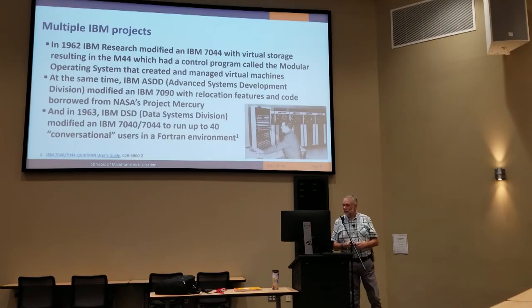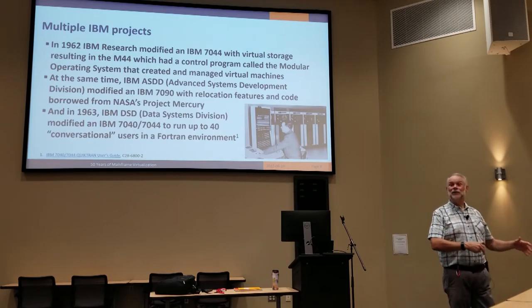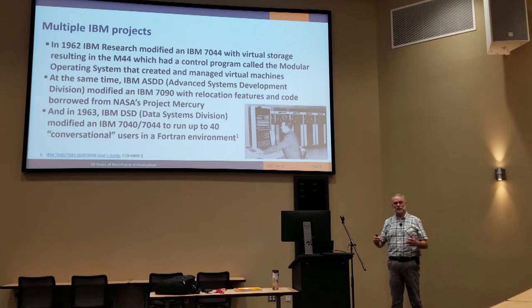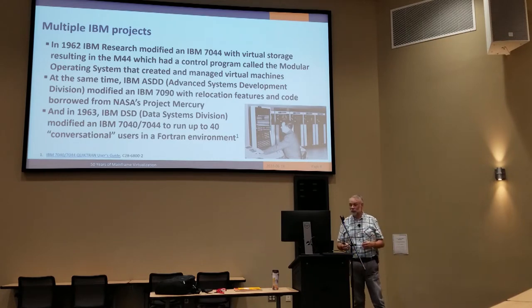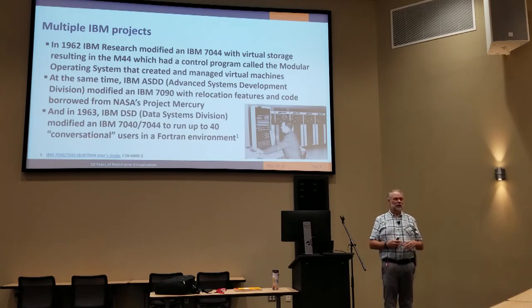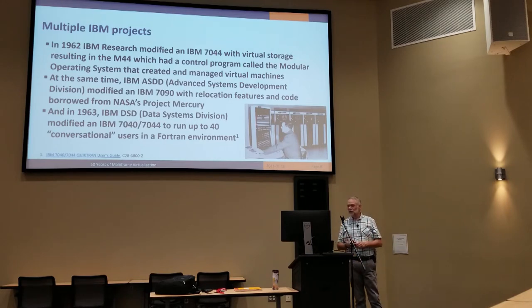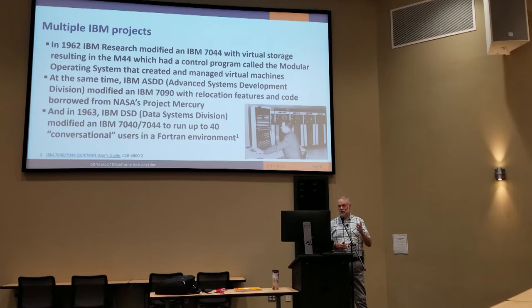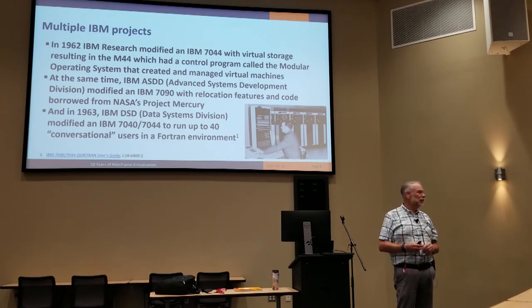IBM in 1962 — the research guys started along with a machine called the 7044. They created a virtual storage version called the M44, with something called the Modular Operating System, the predecessor to CP. Then in 1963, the Data Systems Division — that's the Poughkeepsie/Endicott group — modified the 7040/7044 to run a Fortran environment. This was the first virtualization product from IBM, called QuickTran. You could have 40 users on 1052 terminals using acoustic couplers at about 134 bits per second.